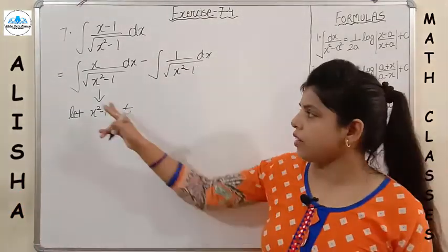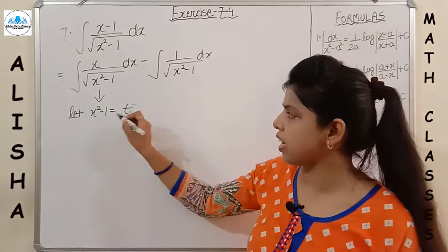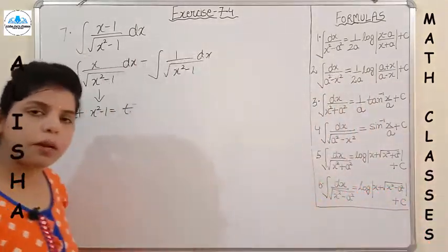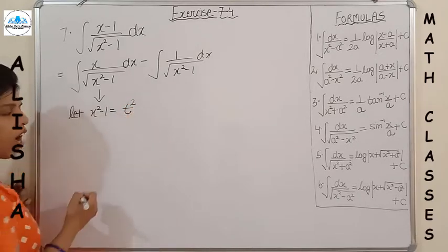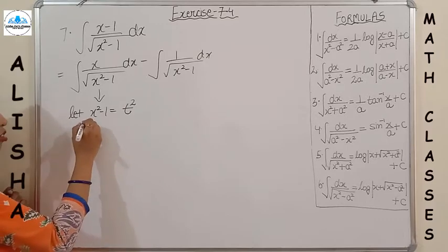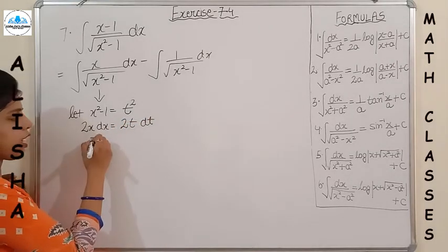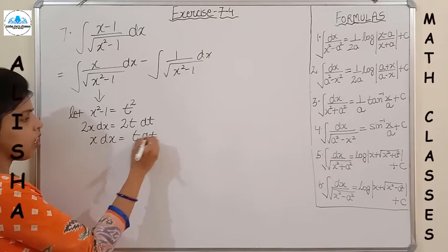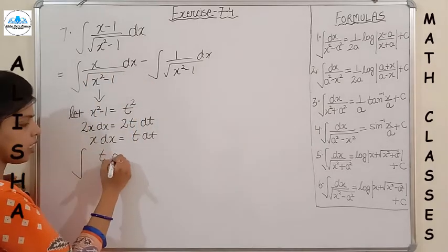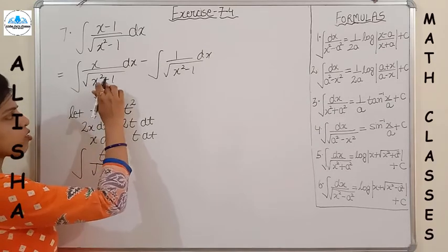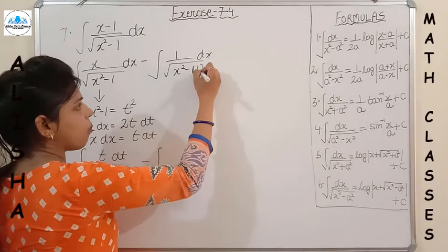Let x² − 1 = t². Differentiating: 2x dx = 2t dt, so x dx = t dt. Substituting: the first integral becomes ∫ t dt / t = ∫ dt = t. The second integral is directly of the form 1/√(x² − a²), which gives log|x + √(x² − 1)|.